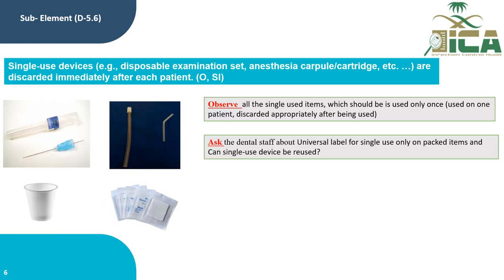Sub-element D5.6 discusses single-use devices. Single-use devices — for example, disposable examination sets and anesthesia carpules — are discarded immediately after each patient. The auditor should observe all single-use items to confirm they are used only once, and ask dental staff about the universal label for single-use-only items and whether single-use devices are ever reused.